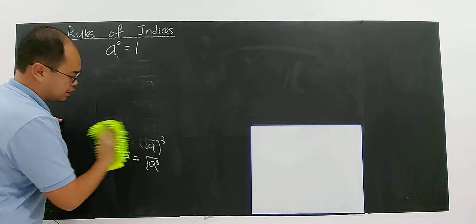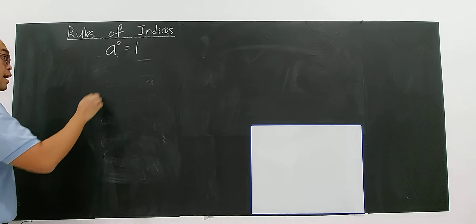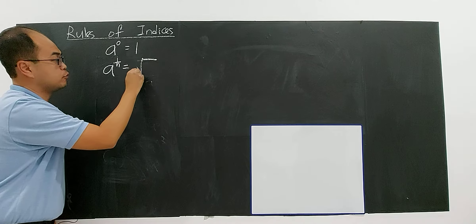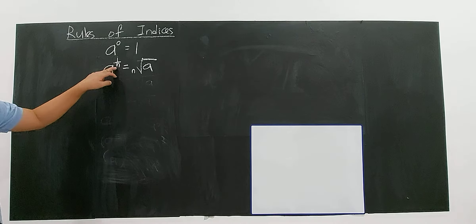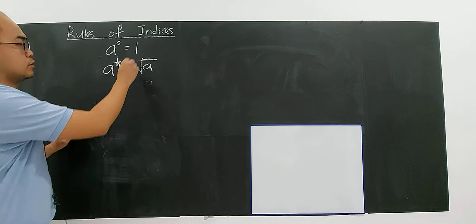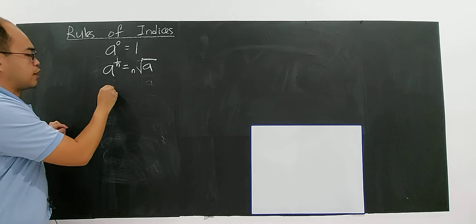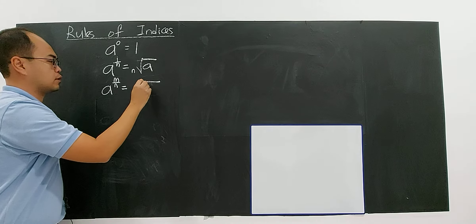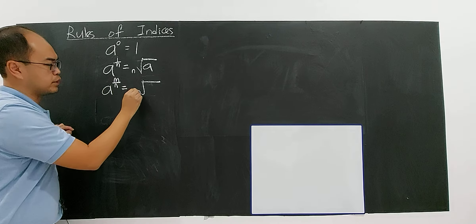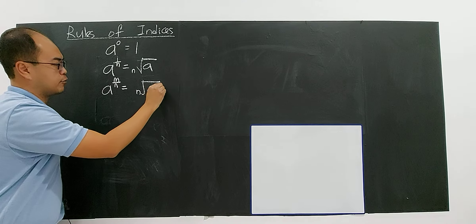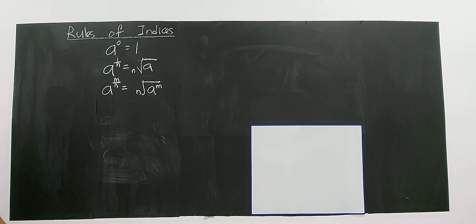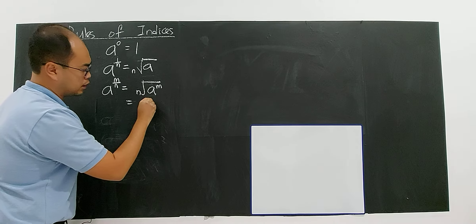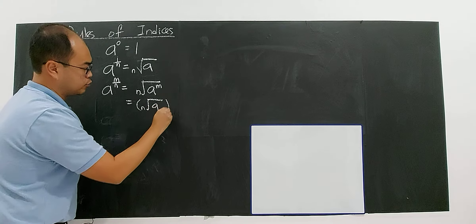To conclude: if you have A to the power of 1 over N, then you will have the Nth root of A. For example, 1 over 5 gives you the 5th root of A. More generally, if you have A to the power of M over N, the denominator N becomes the root and the numerator M becomes the power, written as the Nth root of A to the power of M — or equivalently the Nth root of A, everything to the power of M.